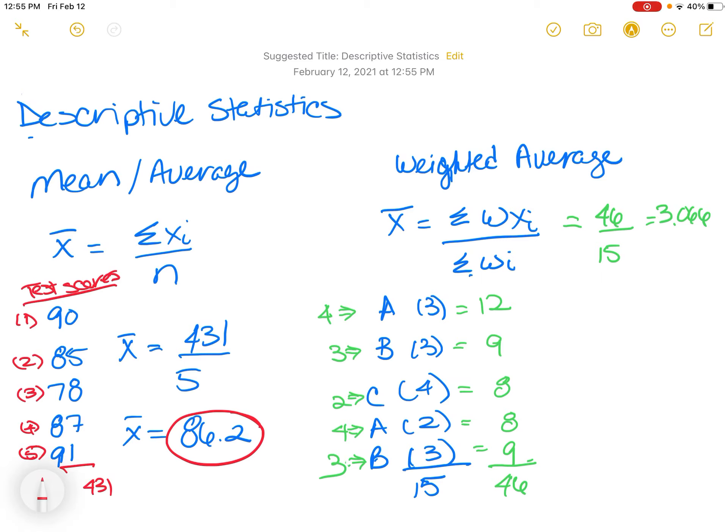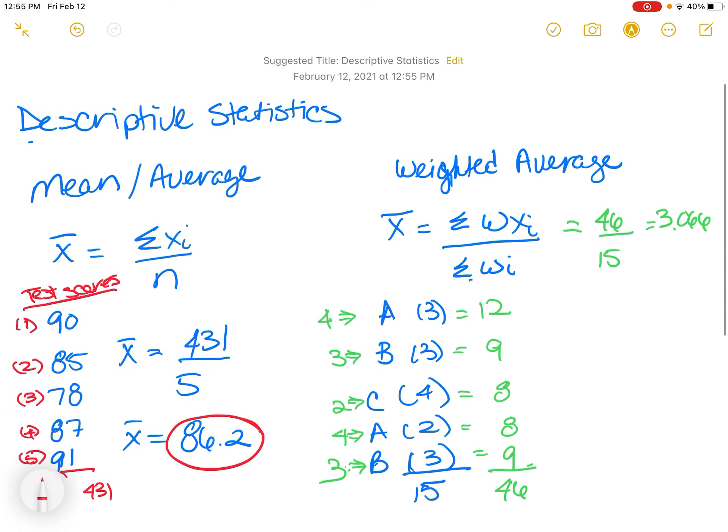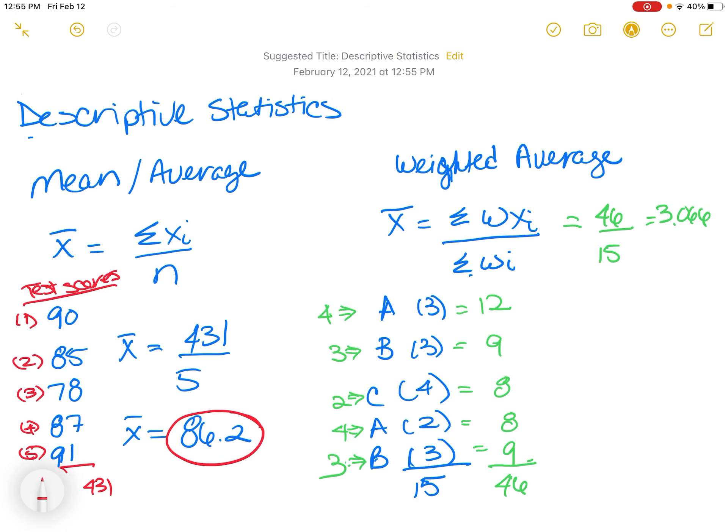Now when we talk about weighted average, sometimes students get a little confused about what I mean with weighted average. So with weighted average, a good example of that is your GPA. It's an excellent example of weighted average. So if we talk about your GPA, let's just say that for this semester you have 15 hours.